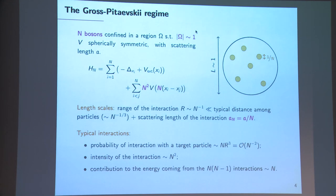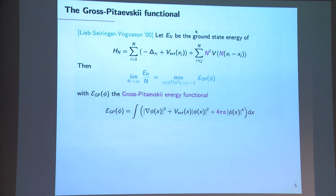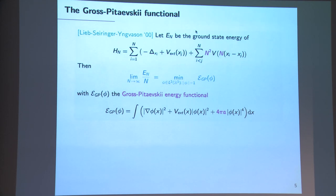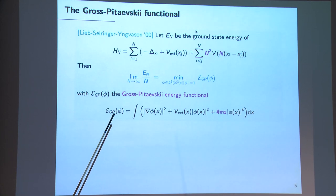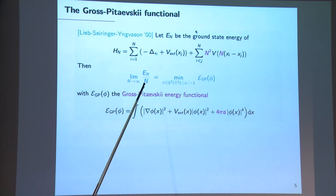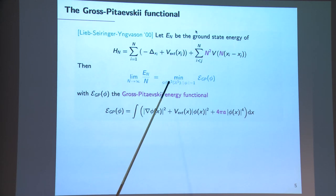The pioneering result in this context is due to Lieb, Seiringer, and Yngvason, who realized that the Gross-Pitaevski regime provides a good description for the cold atom experiments of 1995. Their result from 2000 shows that the ground state energy per particle in the limit N to infinity is described by the minimizer of a one-particle energy functional — the Gross-Pitaevski functional — in which the potential enters only through its scattering length.